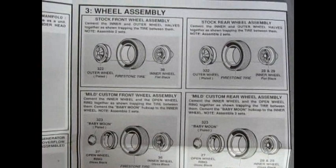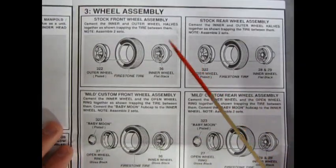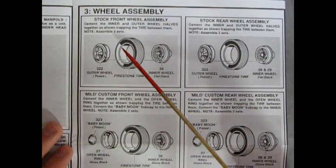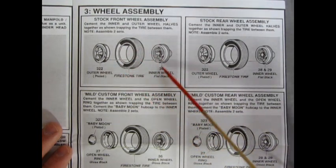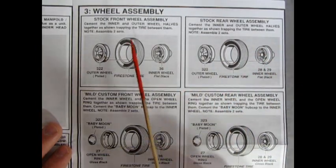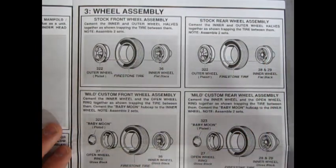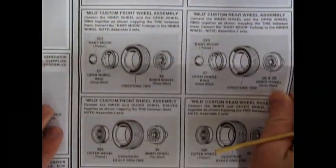Coming over into panel three we get part of our wheel assembly. There's a little more down the page here. Here we get our outer wheels, the Firestone tire and the inner wheels which paint flat black. That's for the stock front wheel assembly. And the rear wheel assembly is the same.